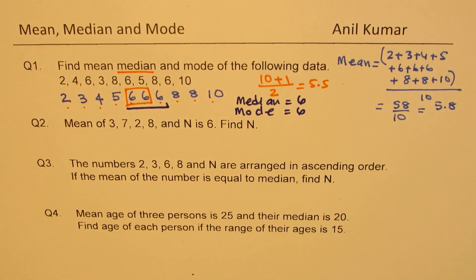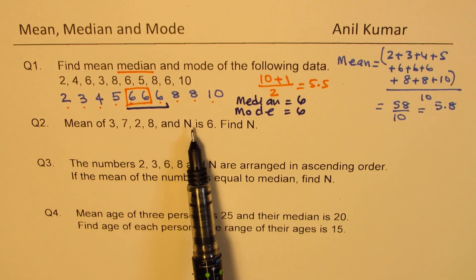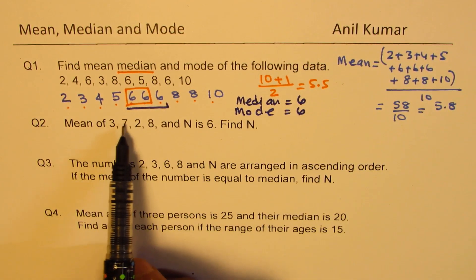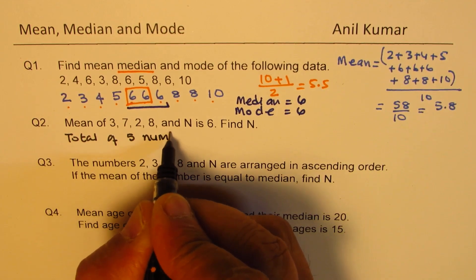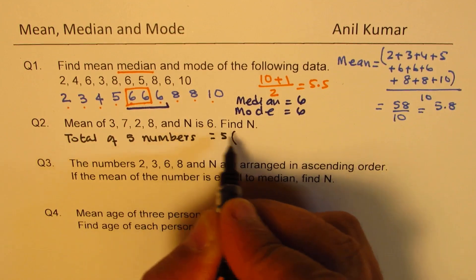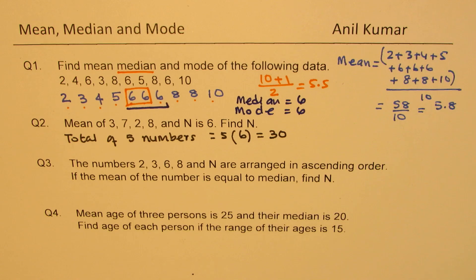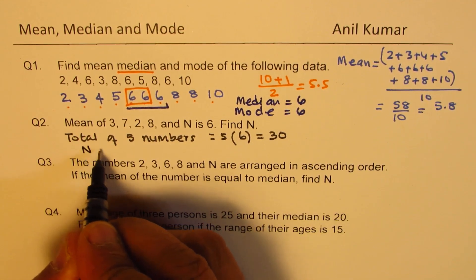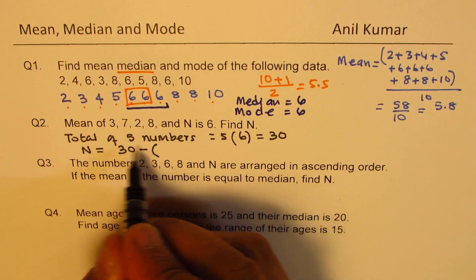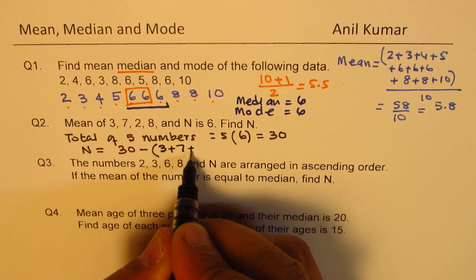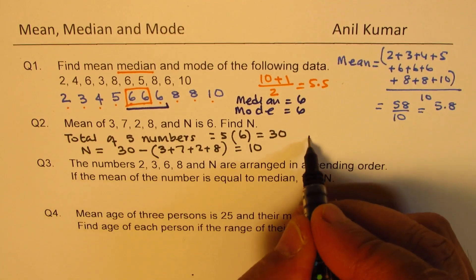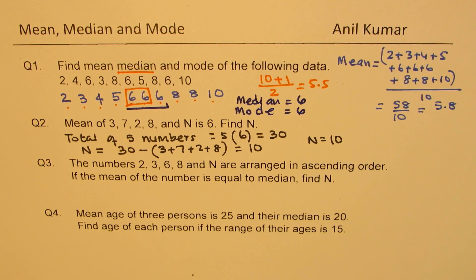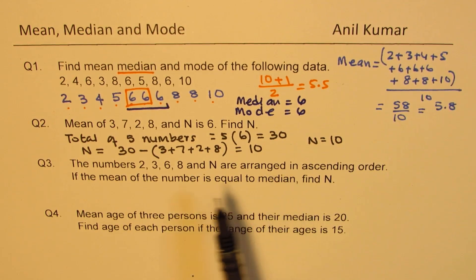Question two: mean of three, seven, two, eight, and n is six — find n. Mean is the average, and there are five numbers. So total of five numbers equals five times the mean, which is five times six equals 30. Therefore n equals 30 minus the sum of the other numbers. Three plus seven is 10, two plus eight is also 10, total 20. So n equals 30 minus 20, which is 10.